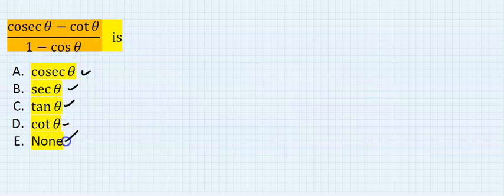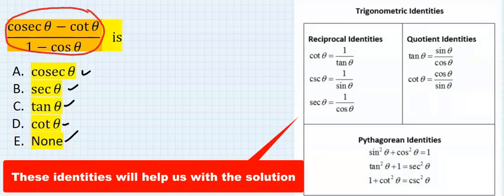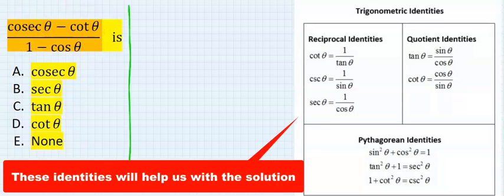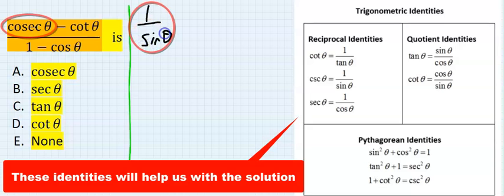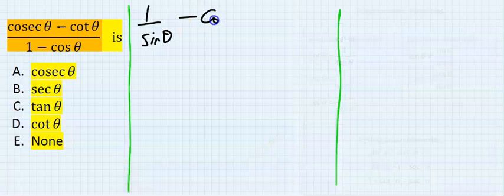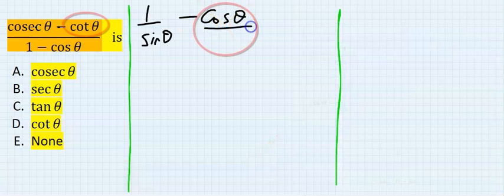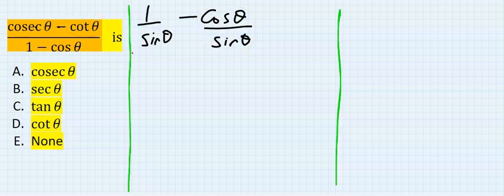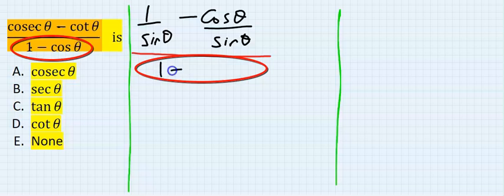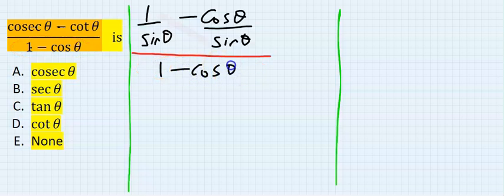One of these is a solution to this. Let's solve it. Cosec theta is 1 over sine theta minus cot theta is cos theta over sine theta, and everything is divided by 1 minus cos theta.